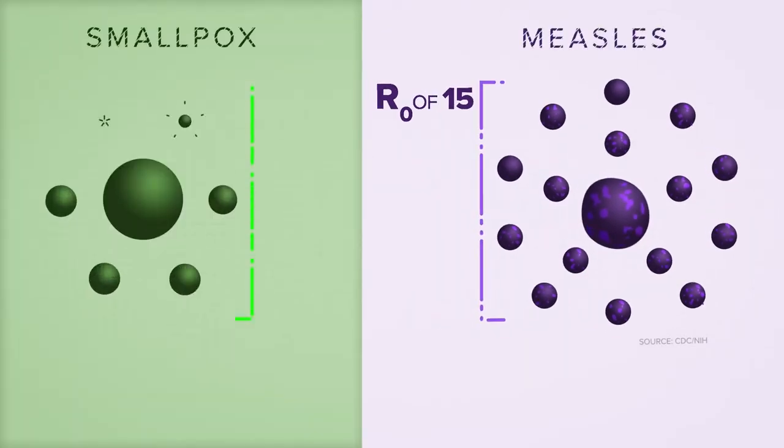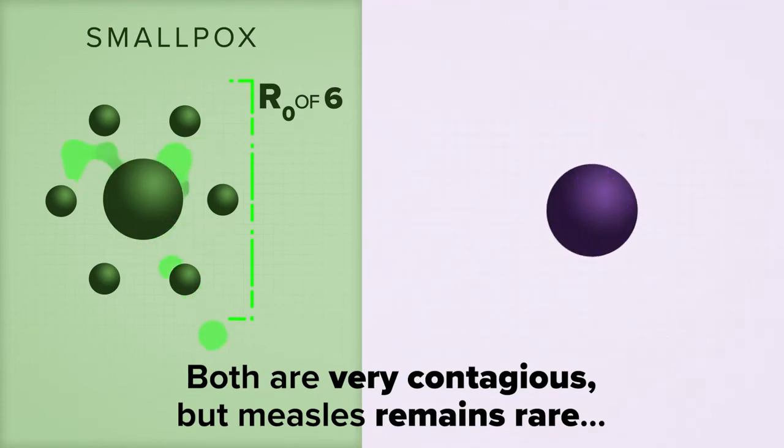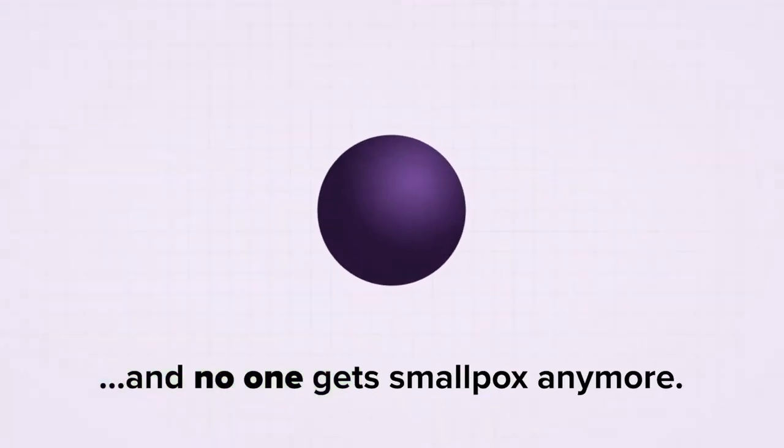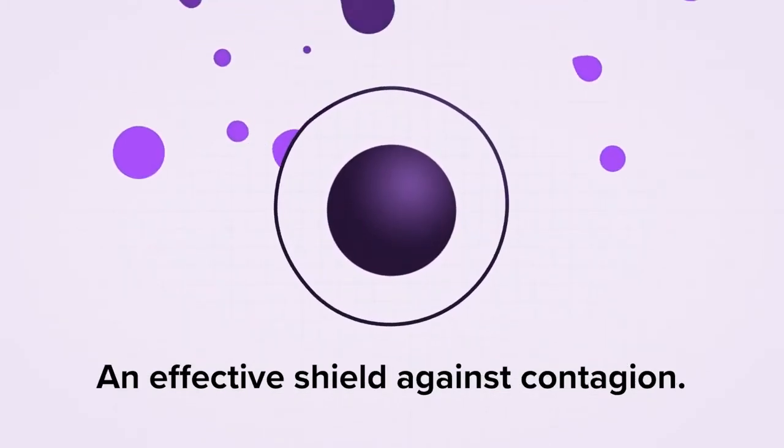The R-naught of smallpox, 6. Both are very contagious, but measles remains rare and no one gets smallpox anymore. Credit the rise of vaccinations, an effective shield against contagion.